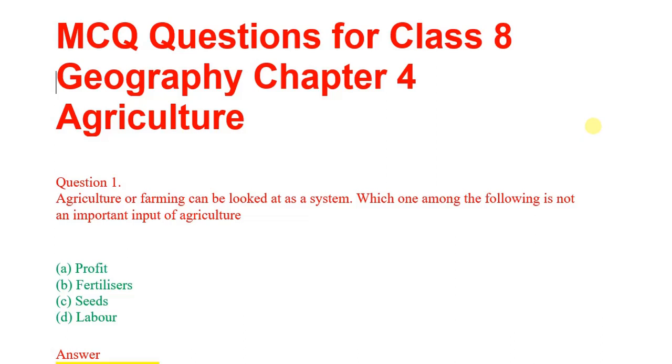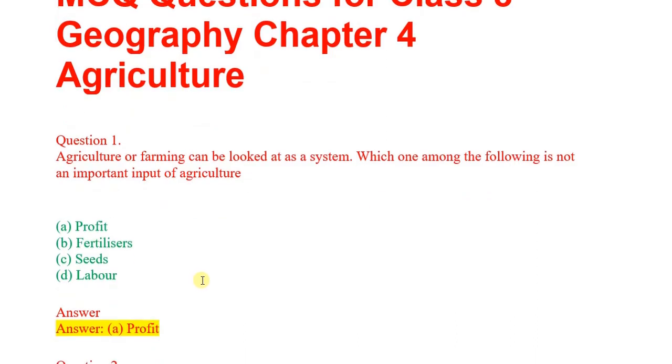First question: Agriculture or farming can be looked at as a system. Which one among the following is not an important input of agriculture? Options: profit, fertilizers, seeds, labor. Correct answer: profit.